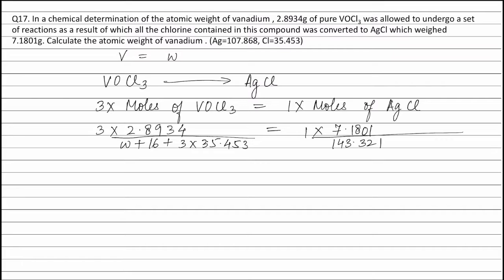Solving this equation, we get the value of W equals 50.9. Therefore, the atomic weight of vanadium is equal to 50.9.